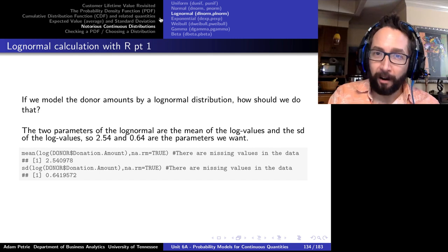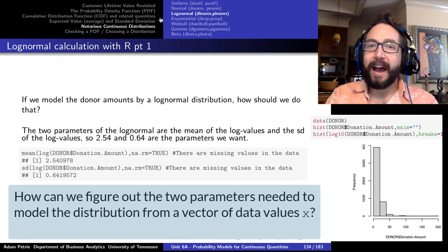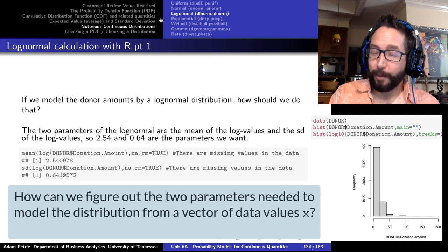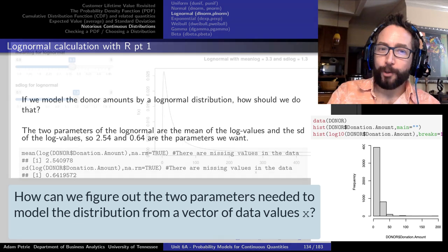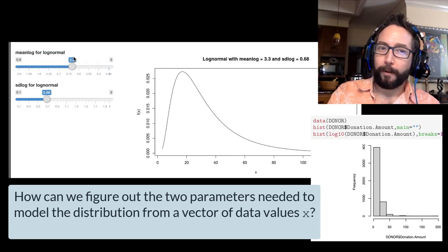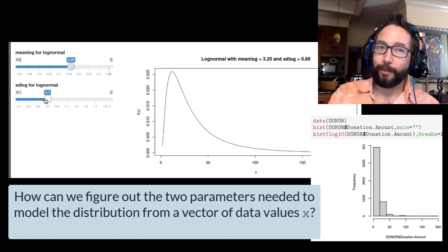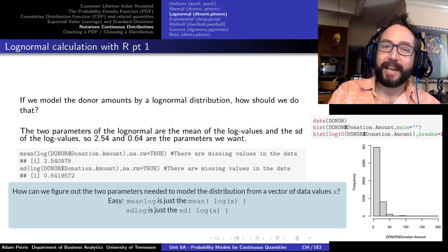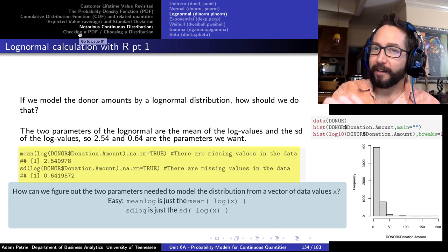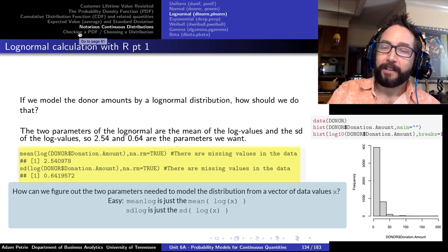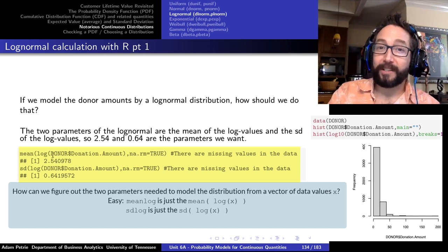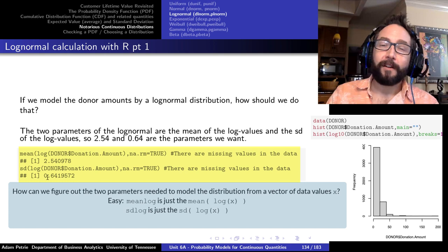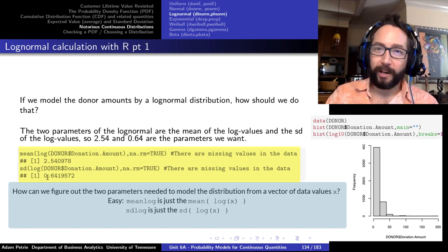To use the log normal distribution in R, we need the meanlog and sdlog parameters. The trick: read in your data and ask for the average and standard deviation not of the original values but of the natural logs of those values. For the donation amount example, the average of the natural log of donation amount is about 2.54, and the standard deviation of the log donation amounts is about 0.64. Those are the two arguments for the dlnorm, plnorm, qlnorm, and rlnorm functions.